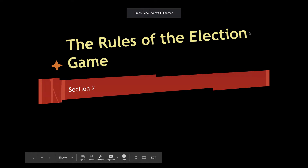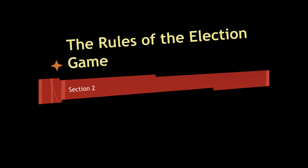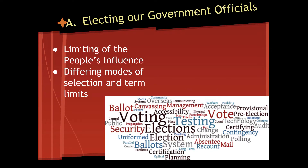Today we want to talk about the rules of the election game and how you can win office in one of the three branches of government. If we think back to Chapter 3 in our conversation on the Constitution, the framers sought to limit the people's influence in selecting who will represent us at the government level. At the end of this lecture, you will have a short discussion board post asking you to talk about how, by differing the modes of selection and the various term limits, the framers are able to achieve these goals.